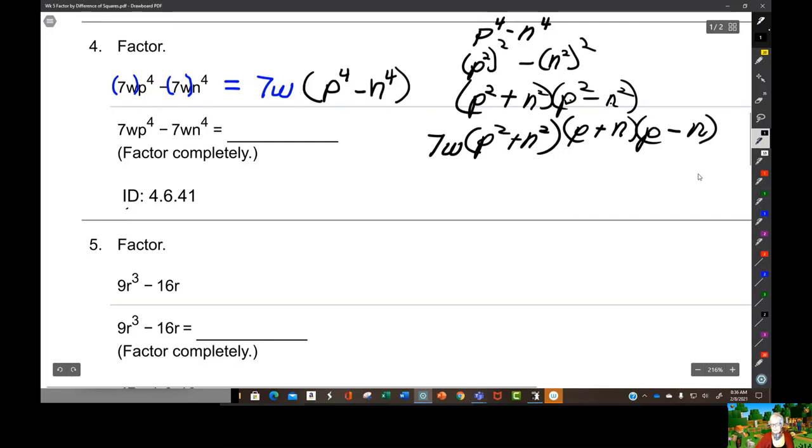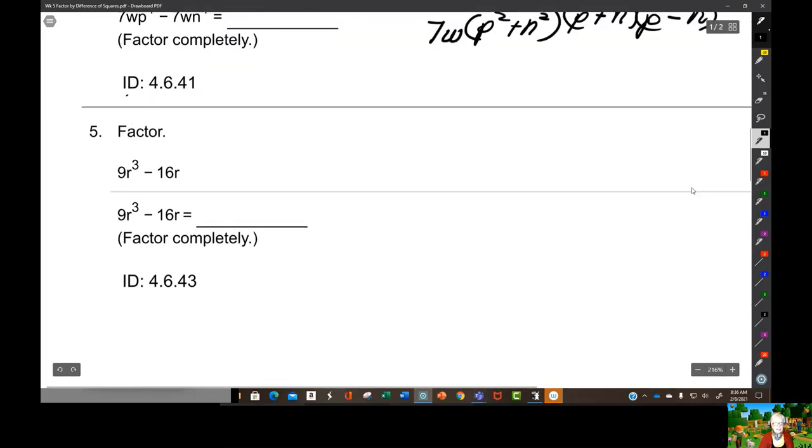One more, we can do this. Nine is 3 times 3, 16 is 4 times 4, or 2 times 2 times 2 times 2. So the numbers don't share a GCF here.